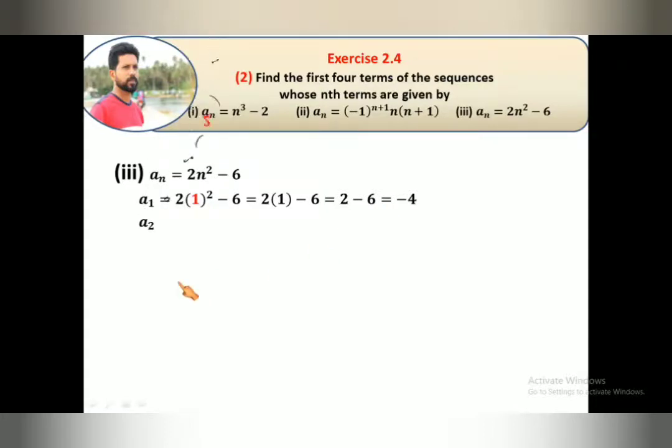Then a₂, n = 2, 2n² - 6. 2 · 2² which is 4 minus 6. 2 · 4 is 8, 8 - 6 equals 2.